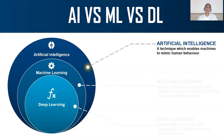We have discussed artificial intelligence many times in previous lectures. Everyone knows there are a number of definitions of artificial intelligence. Artificial intelligence is a technique which enables machines to mimic human behavior.